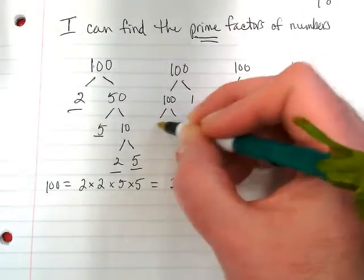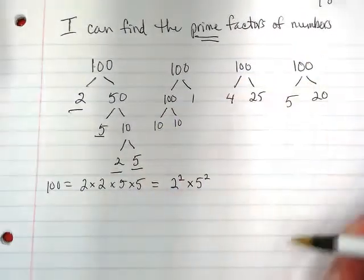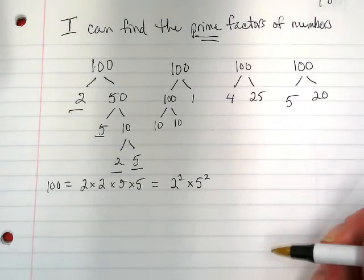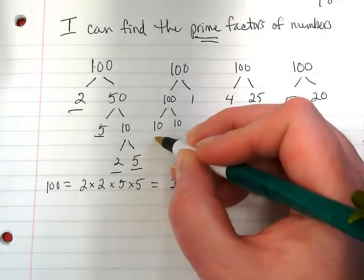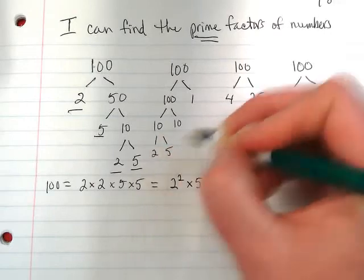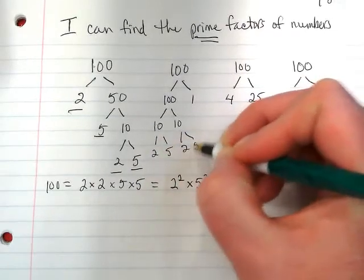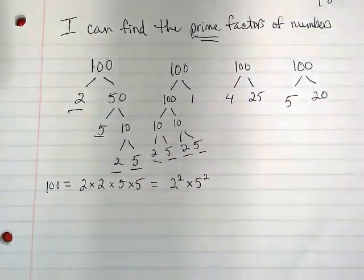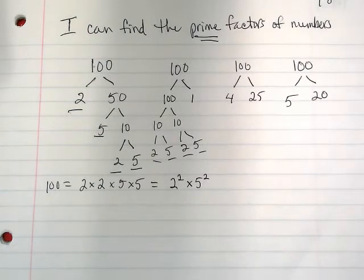So let's go back to one hundred. What if we did ten times ten? And I'm going to get two times five. Two times five. Do I end up with the same numbers again? Two twos and two fives.